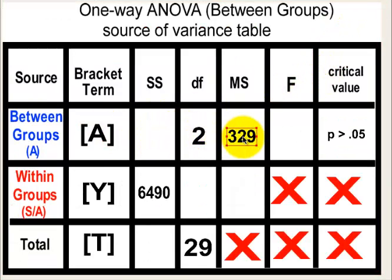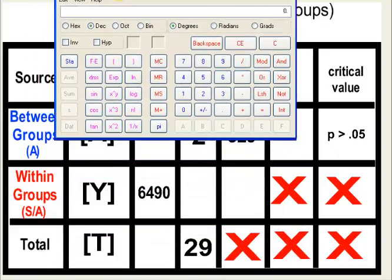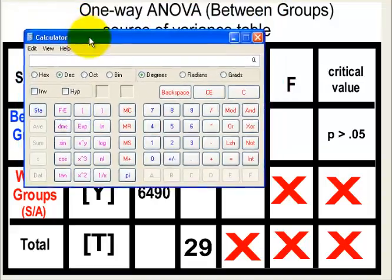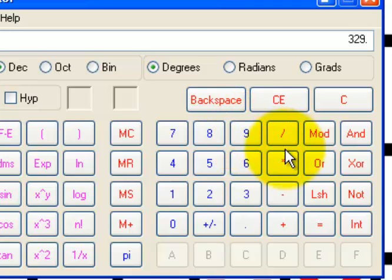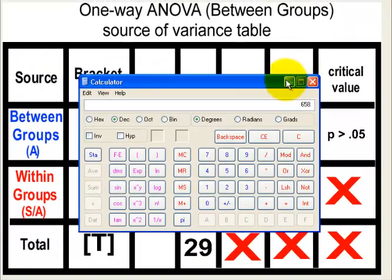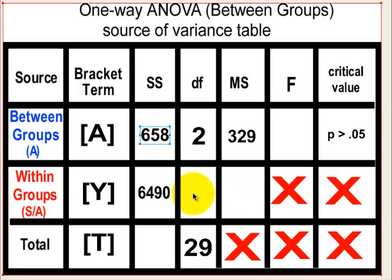We've got some number divided by 2 equals 329 — sounds like an algebra problem. X divided by 2 equals 329. So I'm going to multiply 329 times 2 on my calculator, and that gives me 658. That is our sum of squares. That takes care of that empty box.